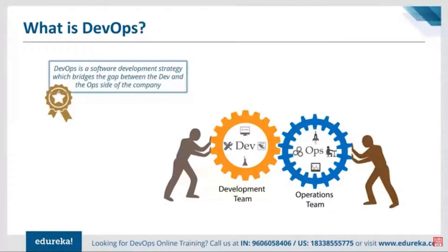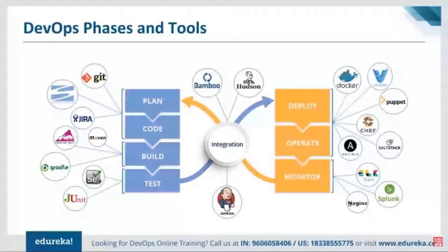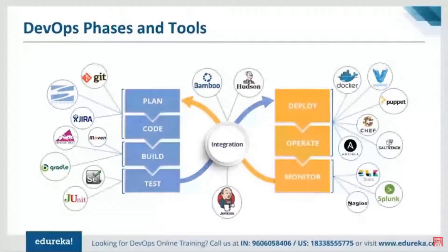The various phases involved in DevOps start with planning — you get requirements from the client and plan your application. Once planning is done, you start writing the code. Multiple developers write code for the same application, so you need a source code management system. Tools like Git and Subversion handle this. Git is a decentralized version control tool preferred by most industries. Then the code is built, which includes validation, compilation, packaging, unit testing, and integration testing.